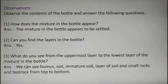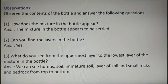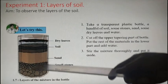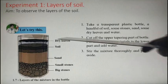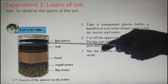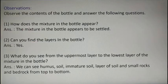Observe the contents of the bottle and answer the following questions. First question: how does the mixture in the bottle appear? Observe and write down the answer. The mixture in the bottle appeared to be settled. You can see a clear layer of water, meaning the mixture is settled. So write down: the mixture in the bottle appears to be settled.